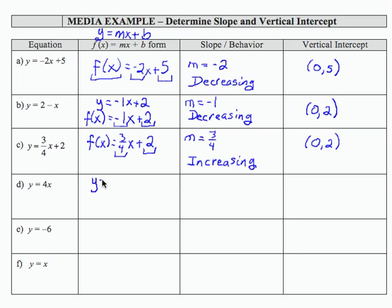I'm missing part of my mx plus b form. So what I need to do is fill in the placeholder. And when there's nothing there, if it's the actual term that's missing, I can replace it with a 0. So now I can write that in function notation, f of x equals 4x plus 0.